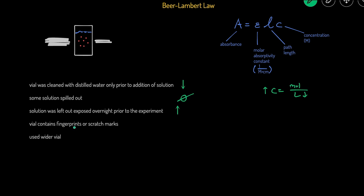Next, if the vial contains fingerprints or scratches: if the glass is not completely clean and there's some blockage, that prevents more light from passing through. The machine measures how much light gets through, so if something like a fingerprint or sticker is blocking light, less light comes through and that registers as a higher absorbance.